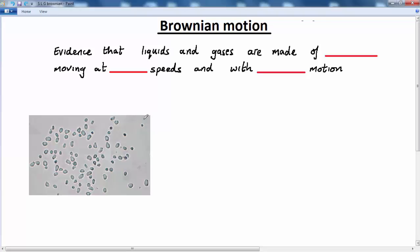In this lesson we're going to look at Brownian motion. Brownian motion provides evidence that liquids and gases are made of tiny particles and that these particles are moving around at very high speeds and with a random motion.